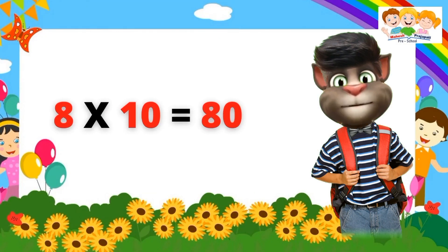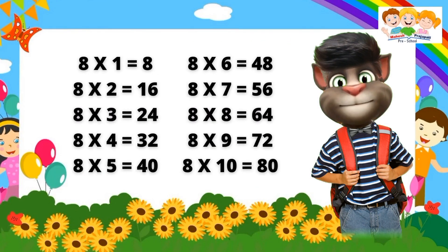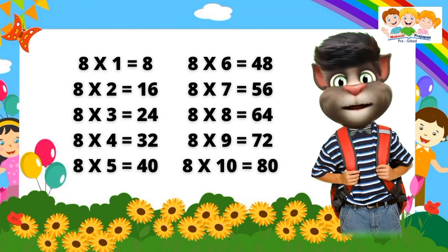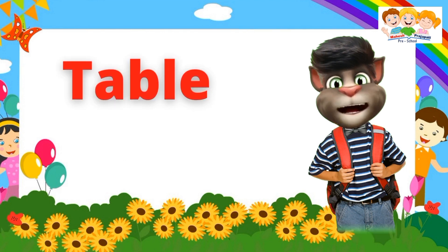Eight ten's are eighty. Eight one's are eight. Eight two's are sixteen. Eight three's are twenty-four. Eight four's are thirty-two. Eight five's are forty. Eight six's are forty-eight. Eight seven's are fifty-six. Eight eight's are sixty-four. Eight nine's are seventy-two. Eight ten's are eighty.